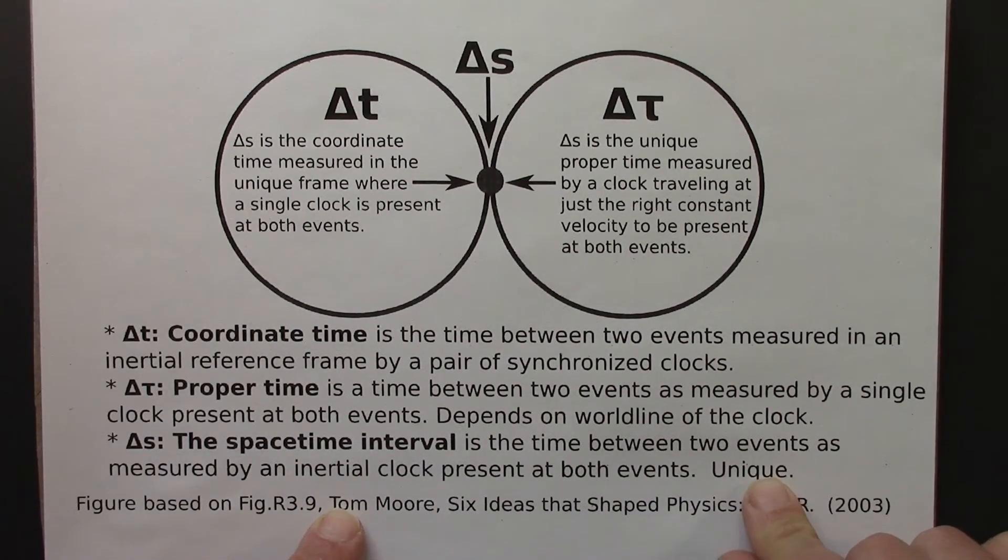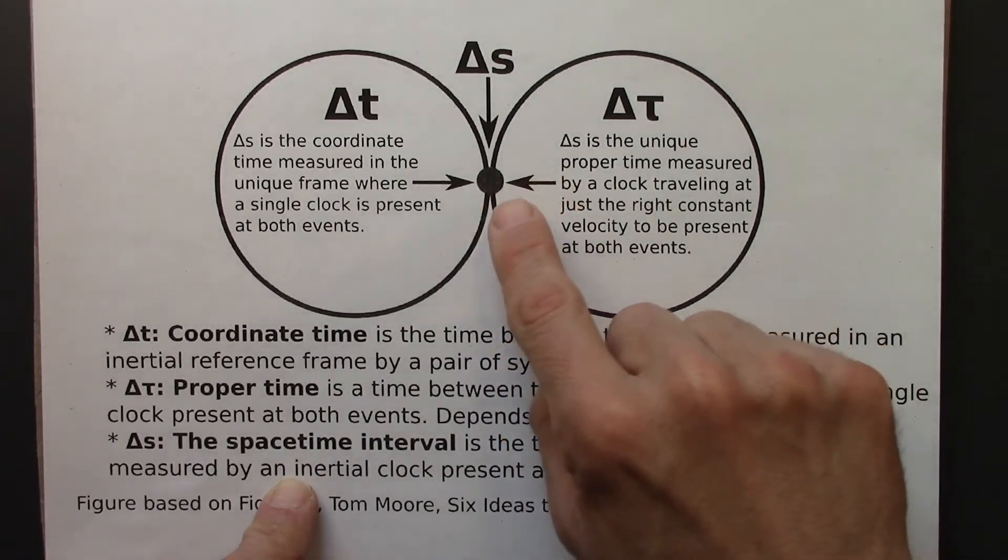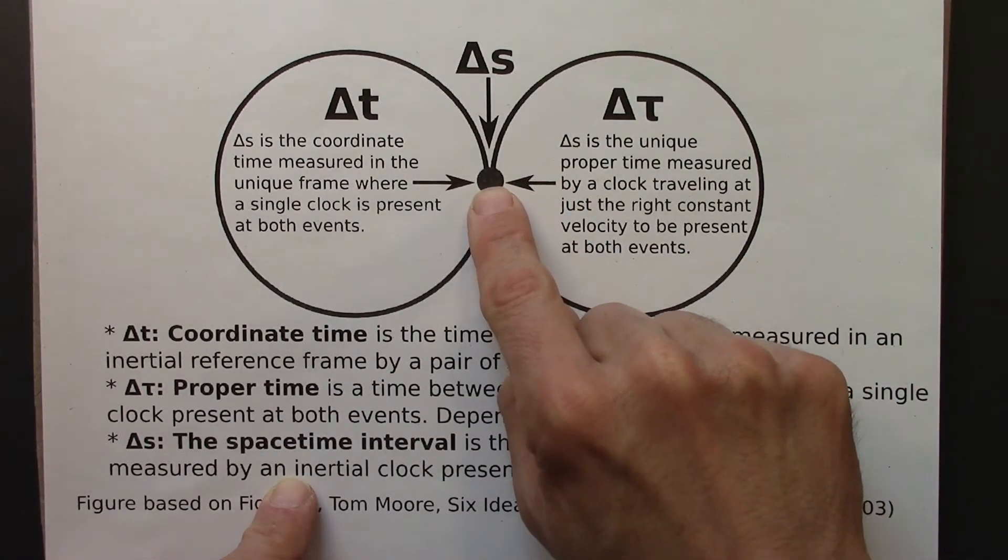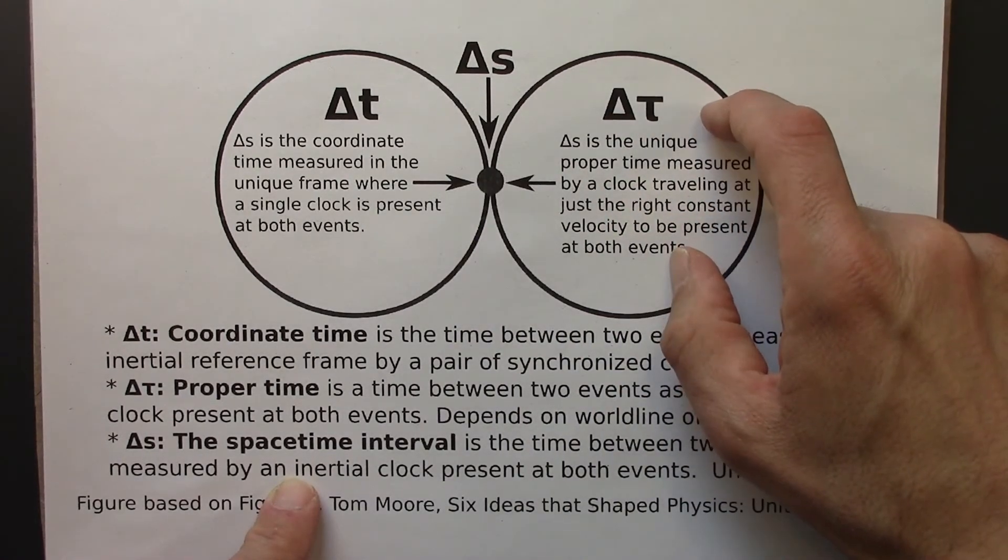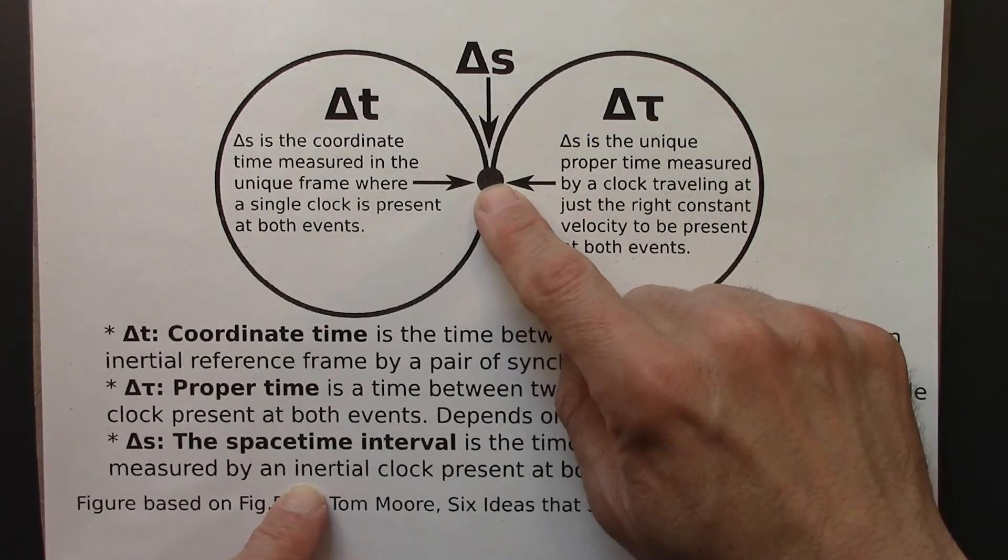It's unique. For a given pair of events, a and b, there's one and only one spacetime interval. So a spacetime interval is a special type of proper time. But not all proper times are spacetime intervals.